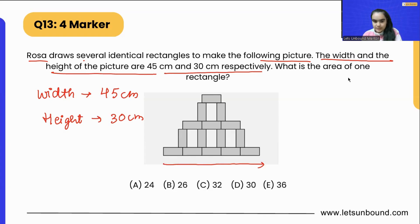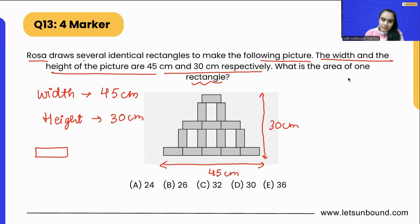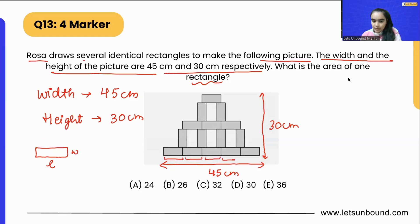So the width is 45 centimeters and the height of this picture is 30 centimeters. The question asks: what is the area of one rectangle? To find the area, we need to find the length and width of one rectangle. Looking at the width of the picture, it contains five lengths of the rectangles.